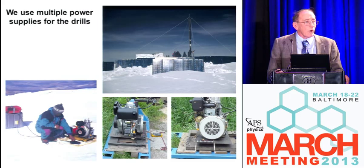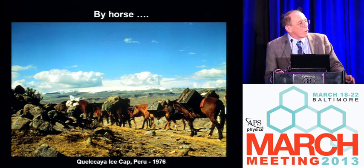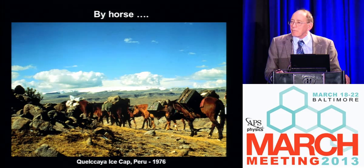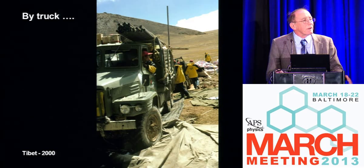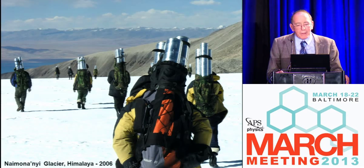Transport is a problem — we're above most aircraft capabilities, and therefore we use what's available in the different parts of the world. This is a view of the Qillqaya ice cap in the Andes of Peru — it's the largest tropical ice cap on our planet. If you're working in Tibet, you have to move across the Tibetan plateau and then up to the top of the Himalayas.